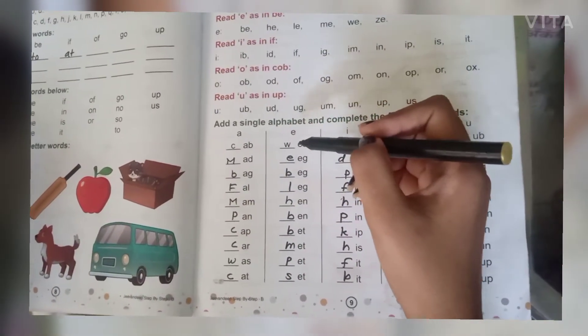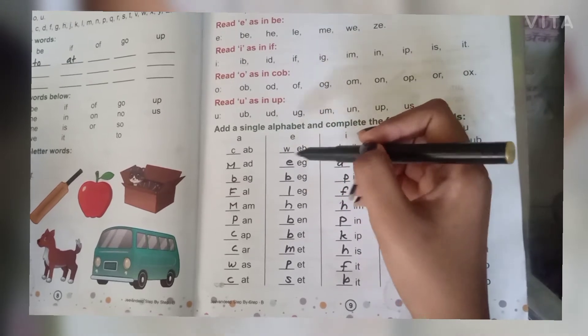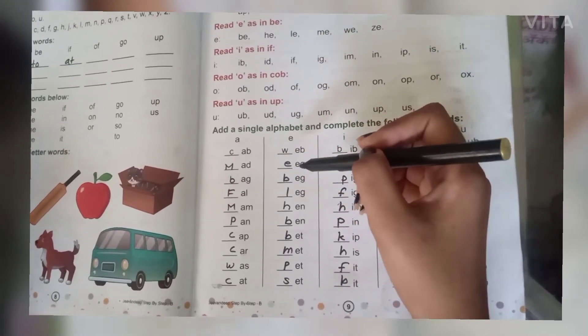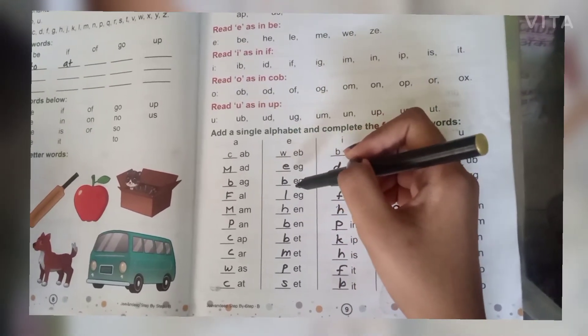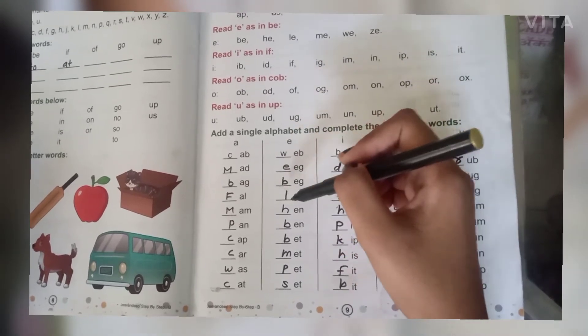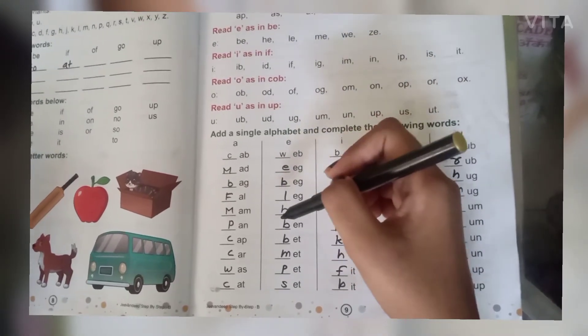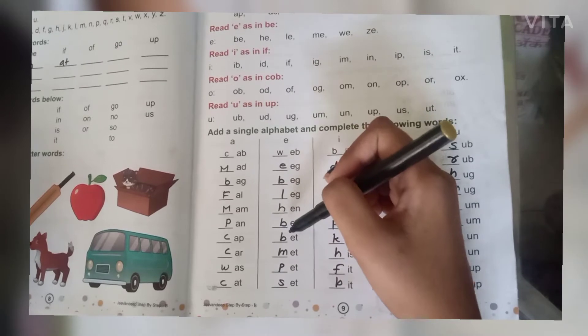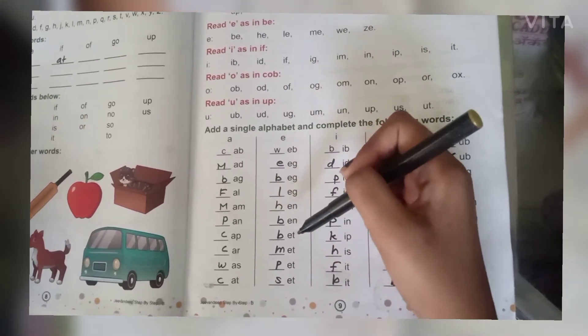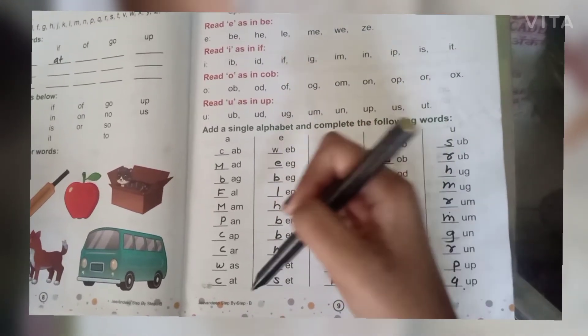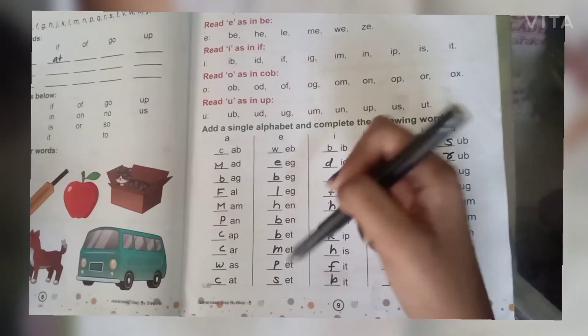W-E-B, web. E-E-G, egg. B-E-G, beg. L-E-G, leg. H-E-N, hen. B-E-N, ben. B-E-T, bet. M-E-T, met. P-E-T, pet. S-E-T, set.